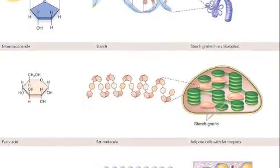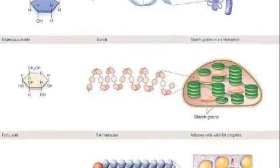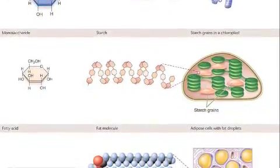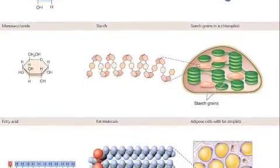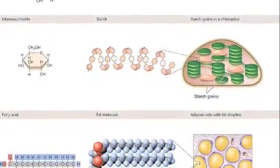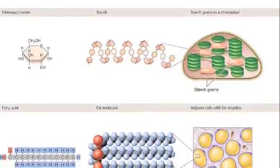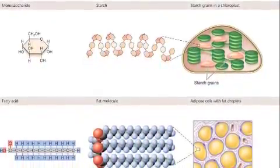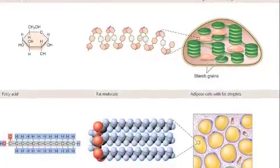And of course, the last one here is the fatty acid, which is the monomer for a lipid. And when you put them together, you get the triglyceride. And this can be found in many different cells.